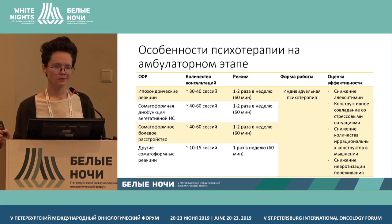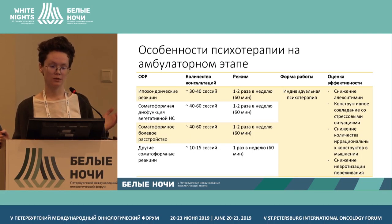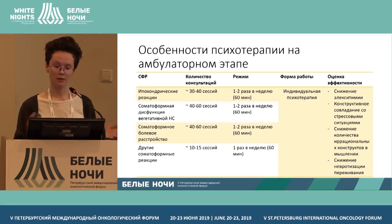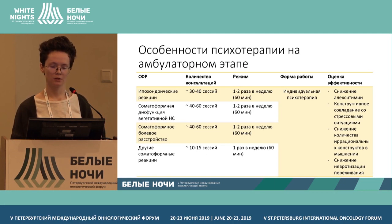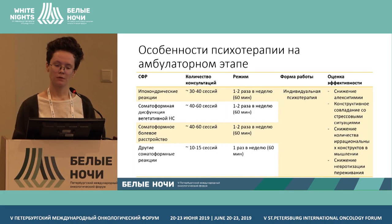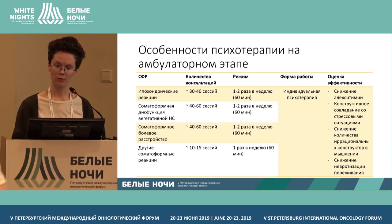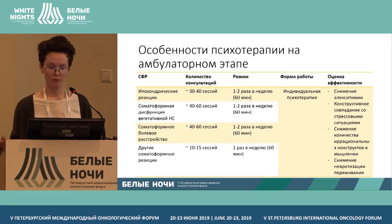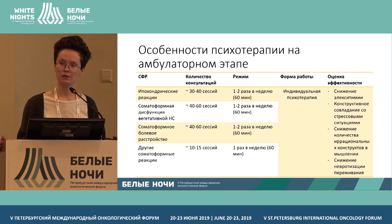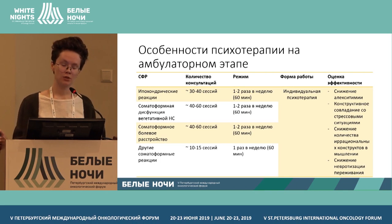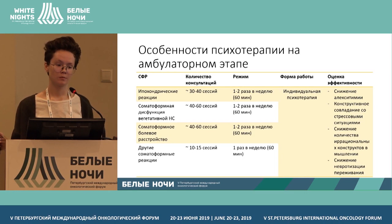Psychotherapy at the outpatient stage goes on in parallel with treatment of the oncological disease. The standard timeline and regimen can involve different situations — there can be hypochondriac reactions, but also depressive disorders and narcissistic disorders. Everything depends on how we work on it. We can talk about 30 to 40 sessions on a weekly basis within two years, so the patient would go to a psychotherapist regularly.